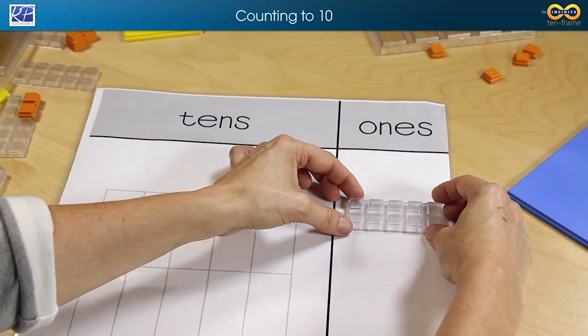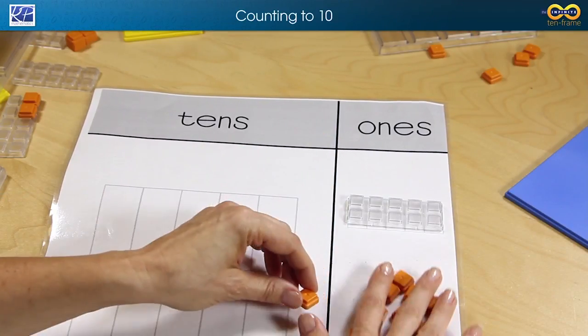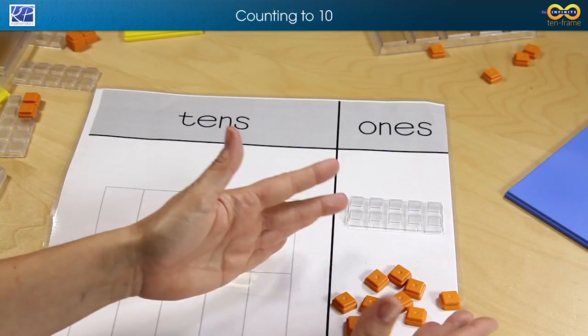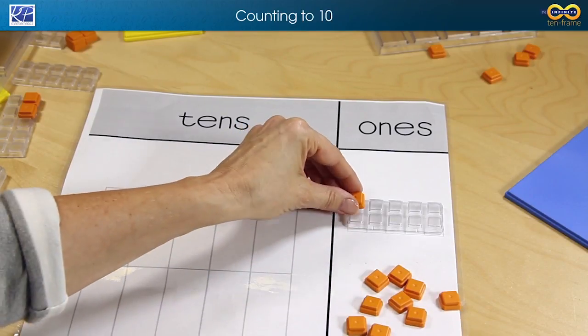First let's look at counting to 10. When using the 10 frame we simply are going to have several one blocks and we're going to count to 10 just like this.